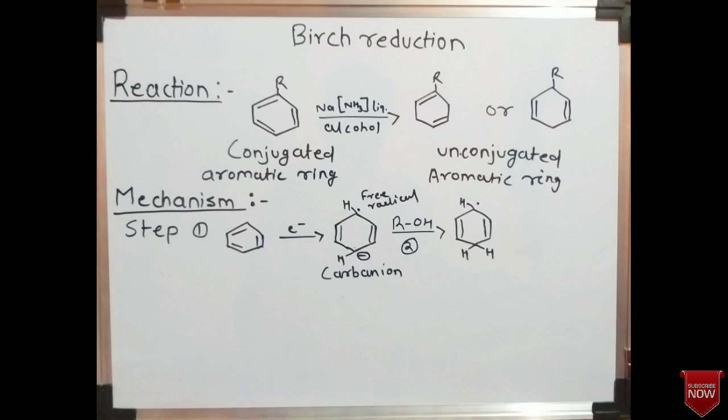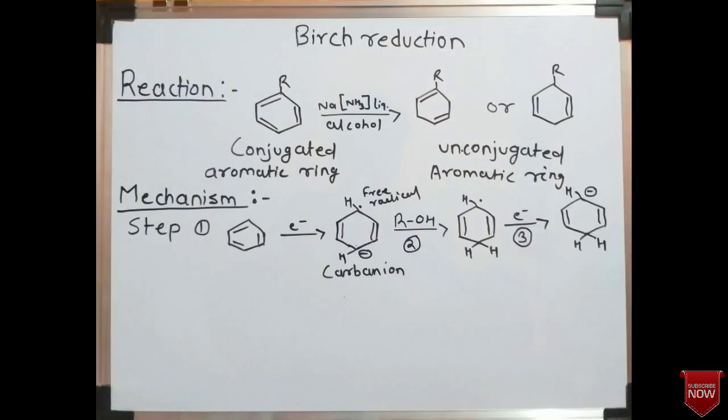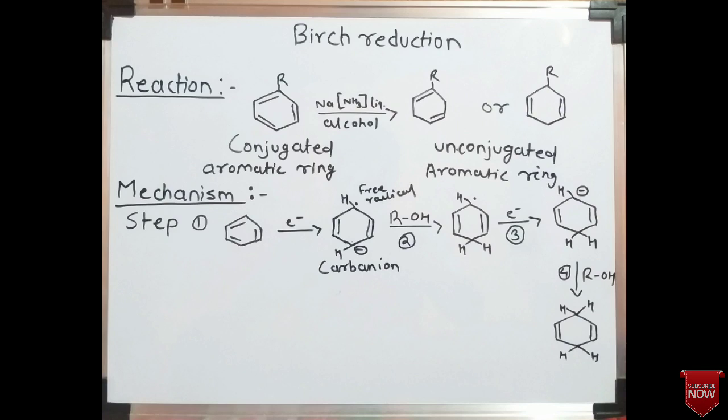In step three, the alkali metal again donates one electron to the free radical, which leads to the formation of another carbanion. Then in step four, the alcohol again donates a proton — a hydrogen atom — which attacks the carbon, and another CH2 group is formed. We can see that the conjugated form is now converted into the unconjugated form.